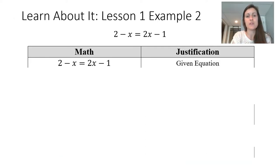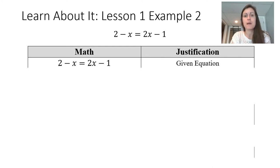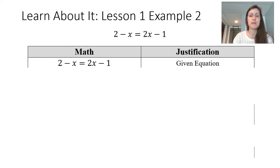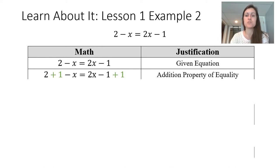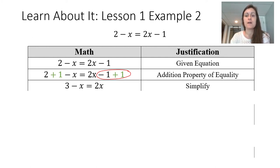There's another strategy to solve 2 minus x equals 2x minus 1 — an algebraic approach. I'll show my math on the left and my justifications on the right. My goal is to find the value of x that makes the equation true. Starting with the given equation, I apply the addition property of equality by adding 1 to both sides. You'll notice a zero pair shows up here — the same zero pair from the algebra tile representation. When I combine like terms, my equivalent equation is 3 minus x equals 2x.